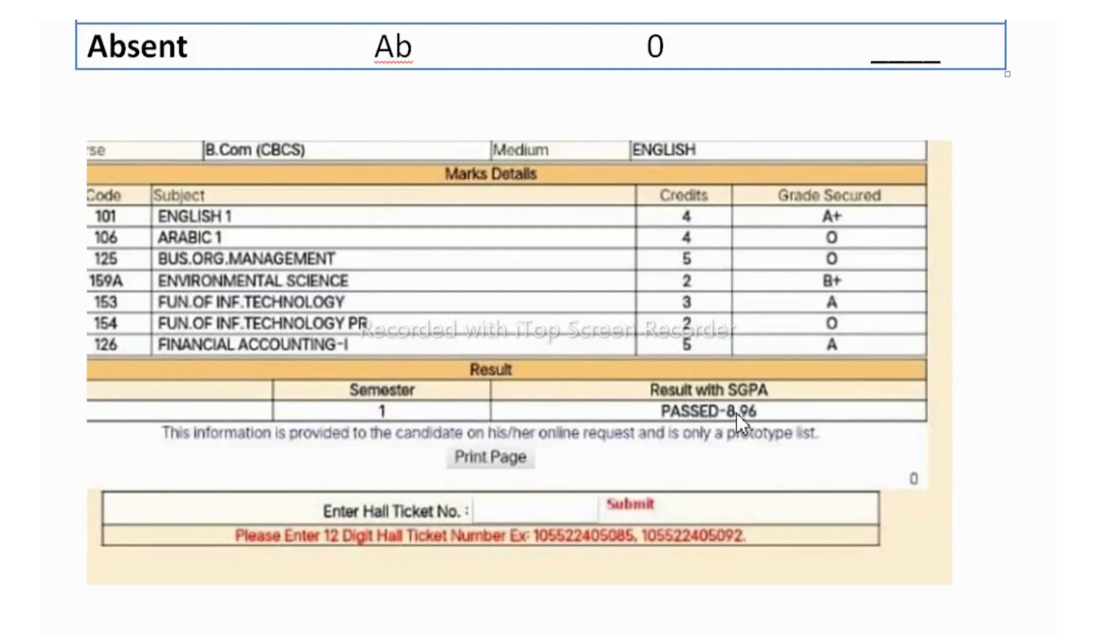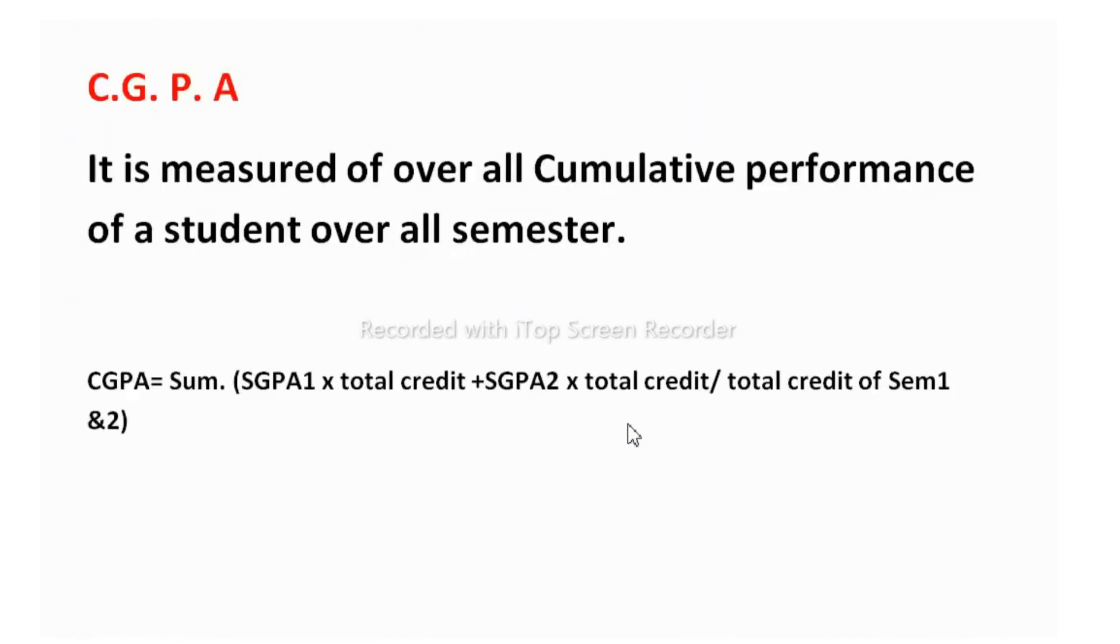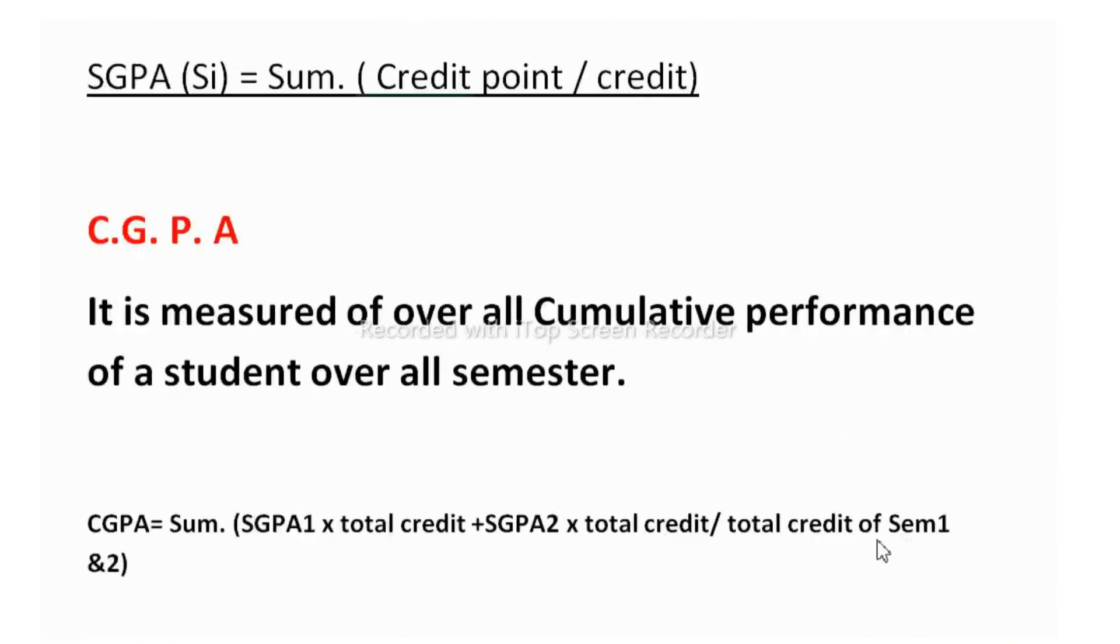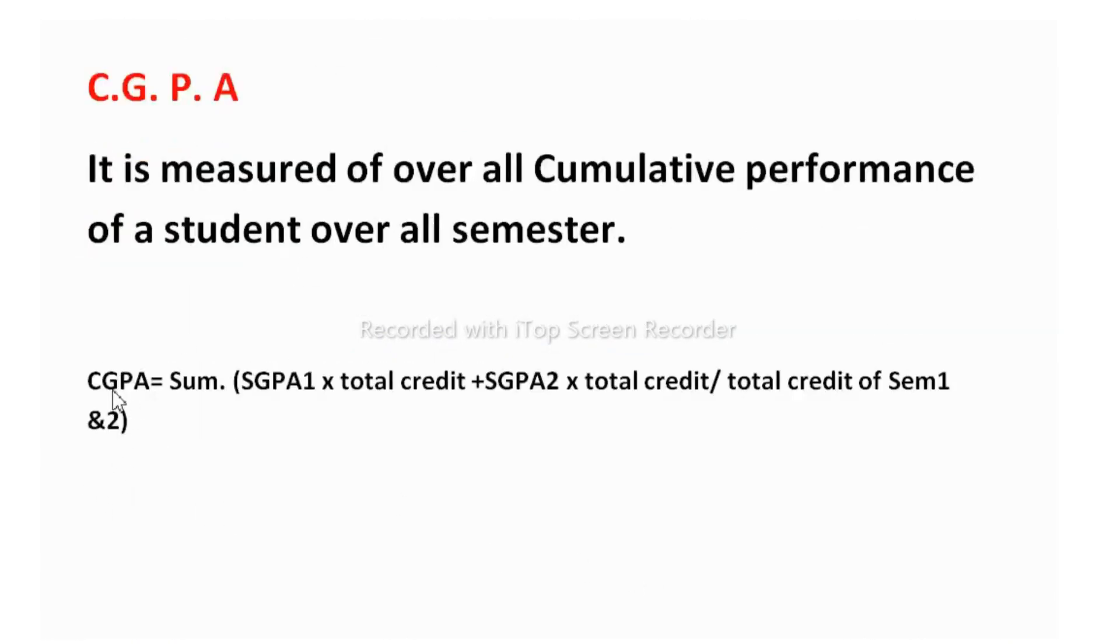SGPA into total credit plus SGPA of second semester into total credit. Then you have to divide it. Total credit of semester 1 and total credit of second semester will be there. So total credit of this and total credit of that, both together you have to mention here divided by, then your CGPA will come. This is for second years, those who completed both the semesters.